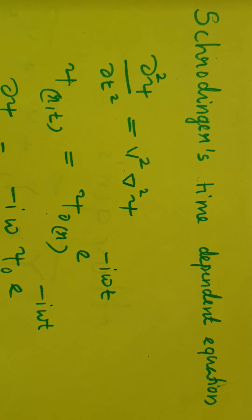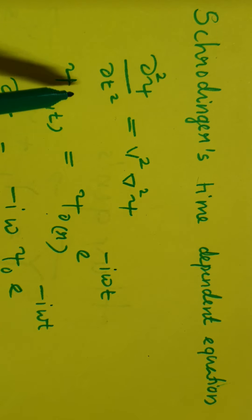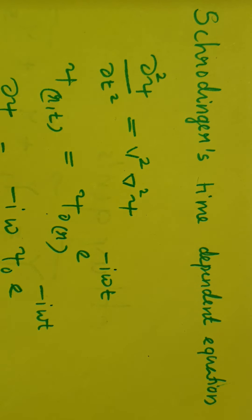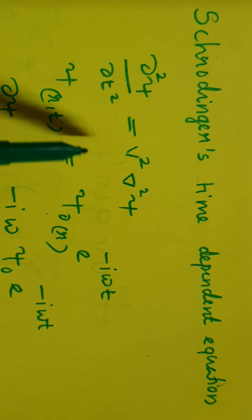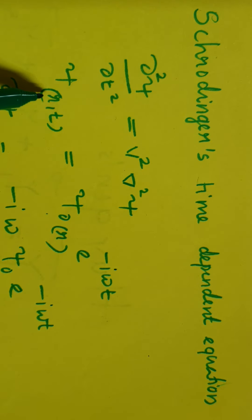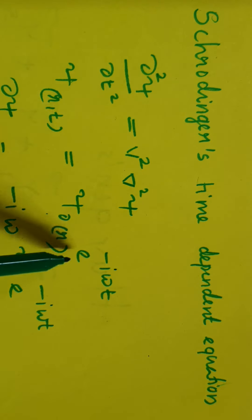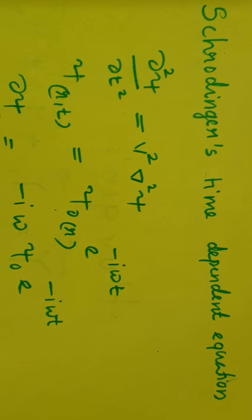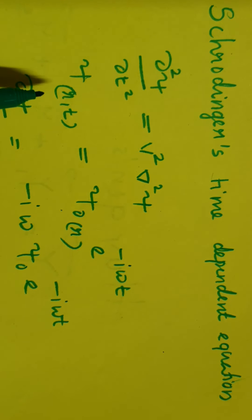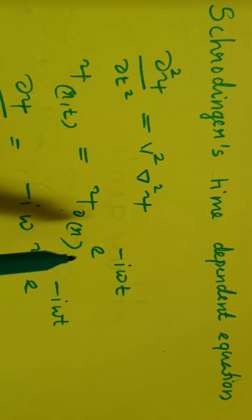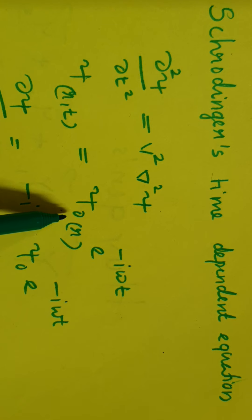Deriving Schrödinger's time-dependent equation from the classical wave equation: ∂²ψ/∂t² = v² ∇²ψ. The solution of this equation is ψ = ψ₀ e^(−iωt), where ψ is a function of position and time, and ψ₀ is a function of position only.